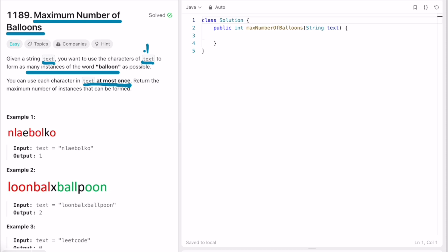We have to return the number of times you can form the word balloon using the characters inside this input text. Now let's take this example and see how we can solve this question. Here you can see that using this B-A-L-L-O-O-N you can form one balloon.